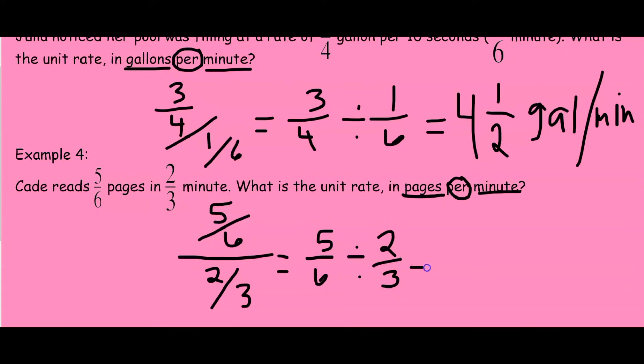And when we solve that, that will tell us that Cade can read one-and-one-fourth page per minute.